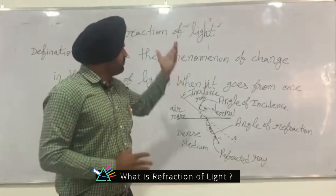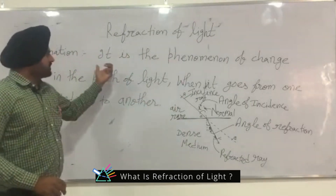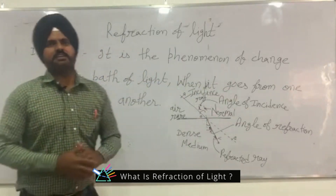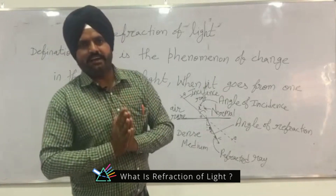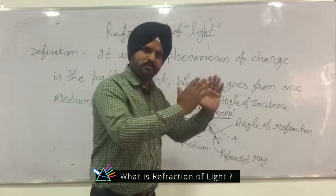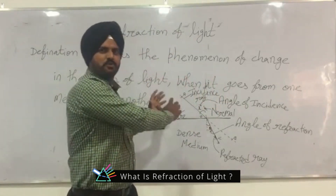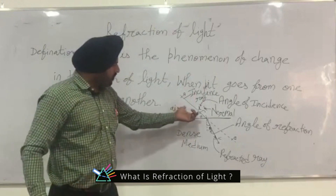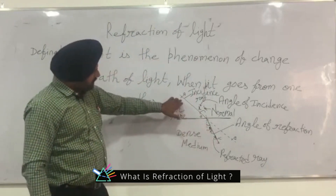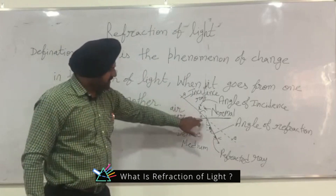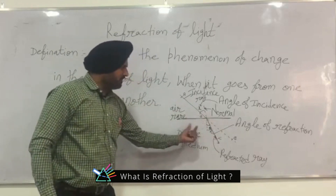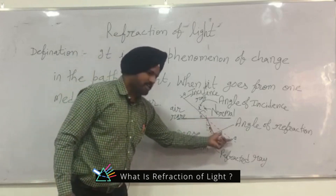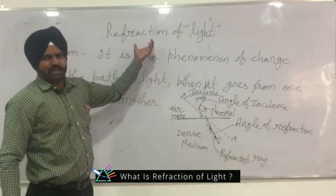What is the meaning of this? So the definition is: it is the phenomenon of change in the path of light when it goes from one region to another. It means that every single ray of light, when it enters a dense medium — such as glass — then you can see a change in the direction of the ray. OA is the ray of incidence, where it hits on the medium. This is an example of refraction of light.